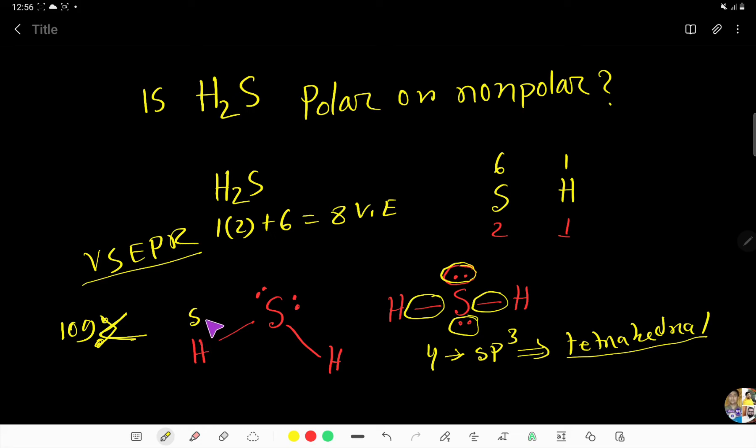So, the electronegativity of hydrogen is less than sulfur. So, sulfur is partially negative and hydrogen is partially positive.